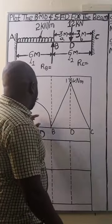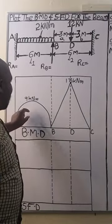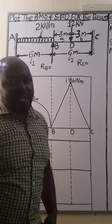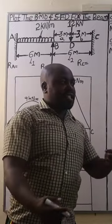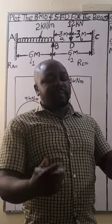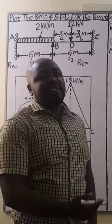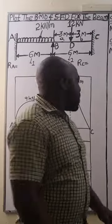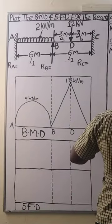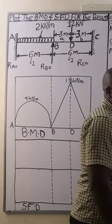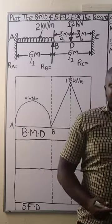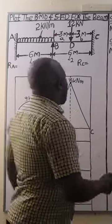From there we are going to determine the area of each of these bending moment diagrams as well as the distance of the center of gravity from A and C respectively. For a fixed beam, we must continue this analysis.